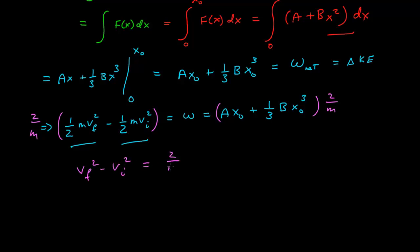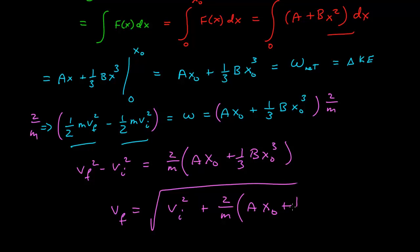and then our v final squared minus v initial squared is 2 over m times this term. Just do all the steps here, and so then our v final is equal to the square root of v initial squared plus 2 over m times A x naught plus one-third B x naught cubed.